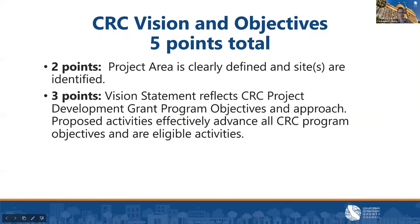For the first section of scoring criteria, Vision and Objectives, worth five points: we want to see that the project area is clearly defined and sites are identified. For project development grant applications, there needs to be an existing facility on the site — it can't be an empty site slated for new construction. We also want to see a vision statement that reflects project development grant program objectives and the overall approach, and that proposed activities effectively advance those program objectives and are eligible.